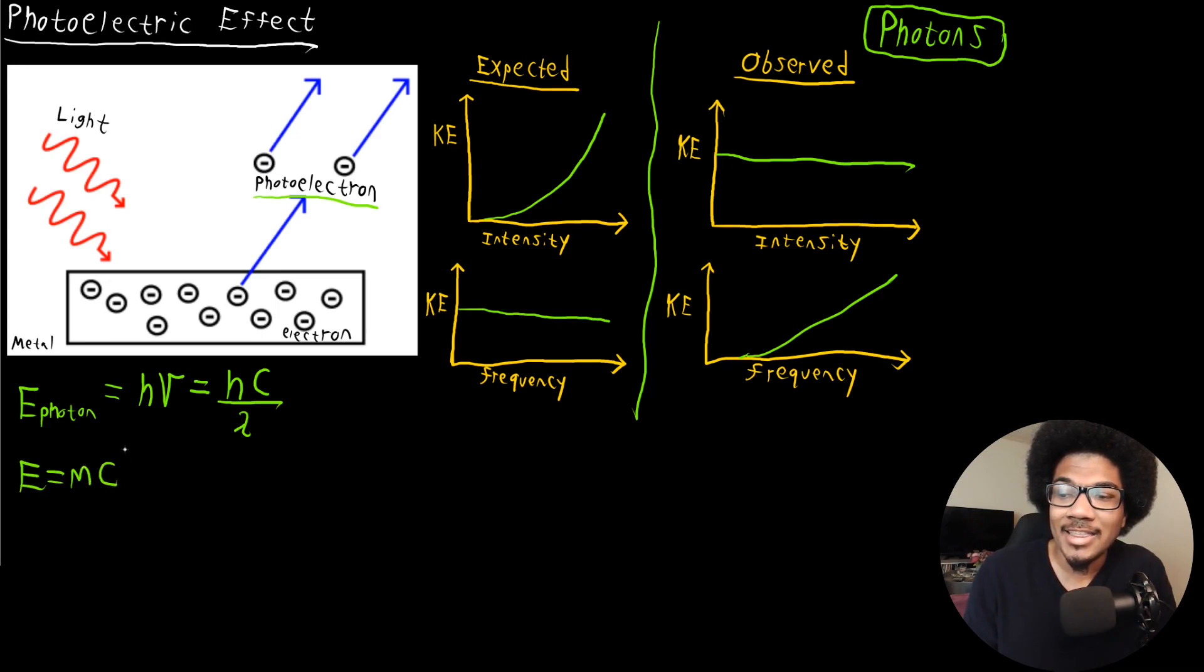So basically, anything with energy has this mass proportional to the square of the speed of light. So what we can do here is use E equals MC squared to isolate the mass. So we have mass is equal to E over C squared.